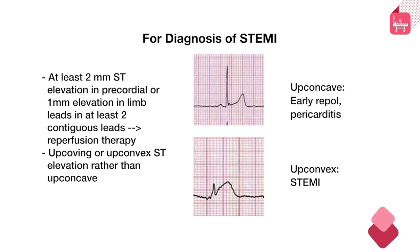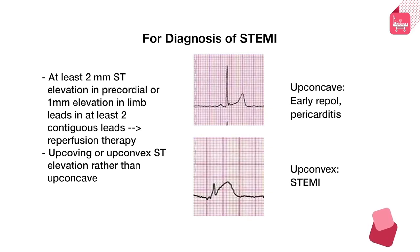The morphology of ST elevation is also important. The classical up-coving or up-convex ST elevation represents ST elevation MI. If ST elevation is up-concave, it is less specific — up-convex ST elevation is highly ominous.